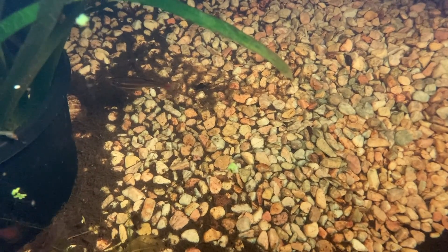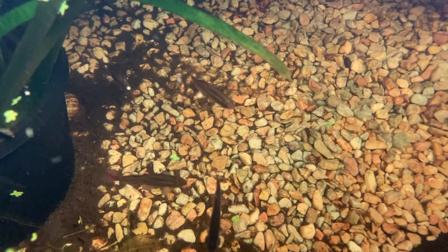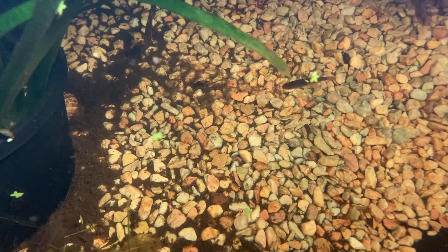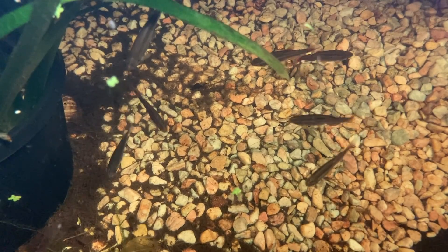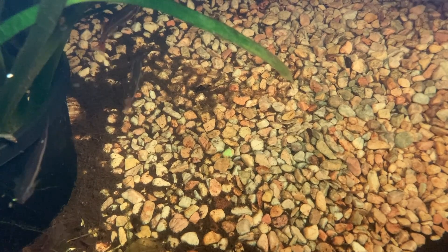If you aren't sure what I mean, here's the quick version. The fish produce ammonia. Ammonia is very bad for fish. The bacteria convert ammonia into nitrite. Nitrite is still bad for fish. Other bacteria then convert nitrite into nitrate, which isn't so bad for fish. This is a process called the nitrogen cycle and it's a very important part of fish keeping. You can learn more about it on my website or just google the nitrogen cycle in a pond or an aquarium.